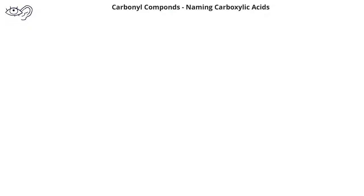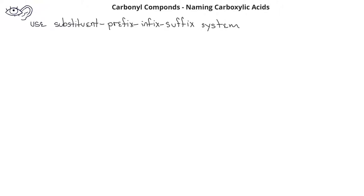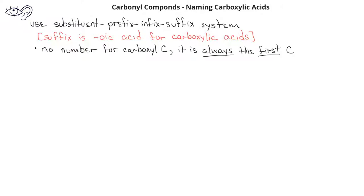When we name carboxylic acids, we follow the same substituent, prefix, infix, suffix system that we've used to name other organic compounds. However, it's important to note that with carboxylic acids, we do not need to indicate the location of the carbonyl carbon because, by definition, in carboxylic acids, the carbonyl carbon is always the first carbon in the carbon chain.